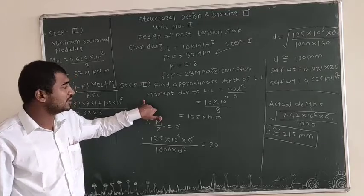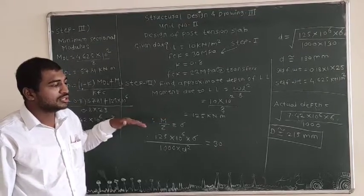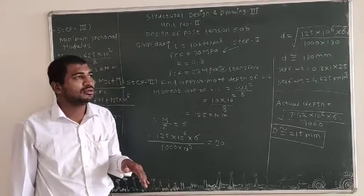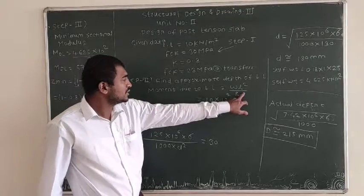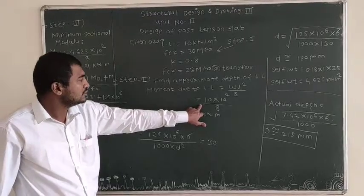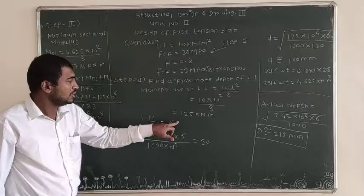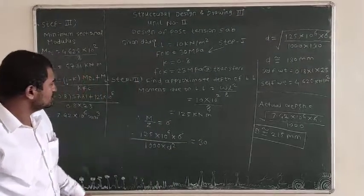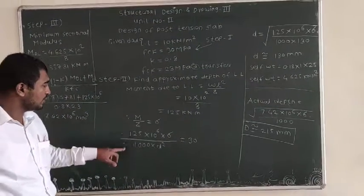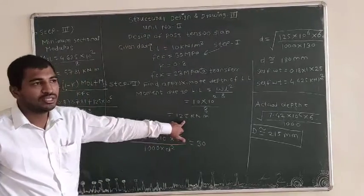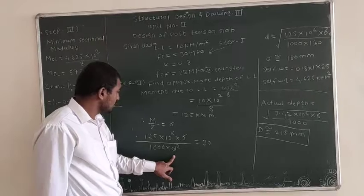The live load is a uniformly distributed load over the span. The formula is M = WL²/8, where W = 10 and span = 10, so M = 10 × 10² / 8 = 125 kN·m per meter. Then M/Z = σ gives 125 × 10⁶ × 6 / (1000 × D²) = 30. Solving for D, the value is approximately 180 mm. Self-weight = 0.18 × 1 × 25 = 4.625 kN/m².